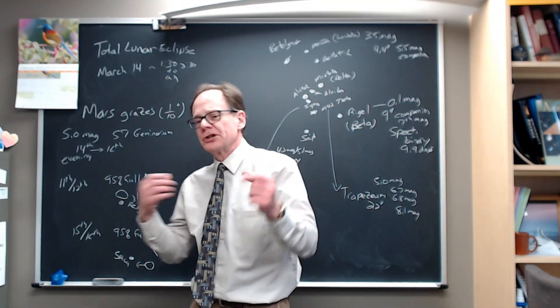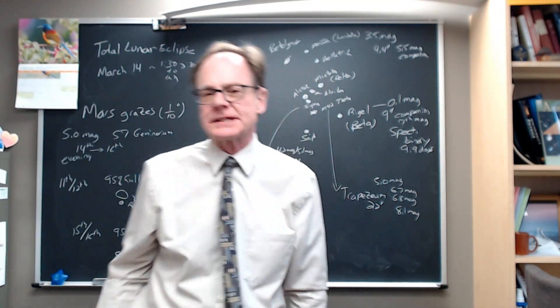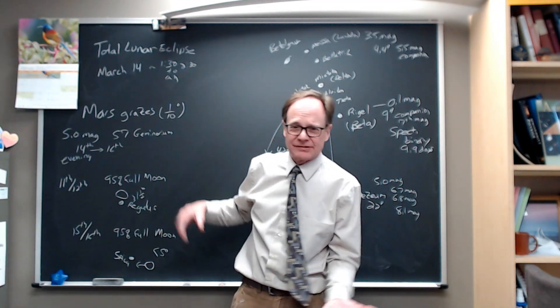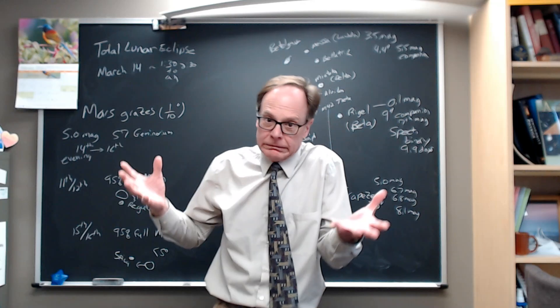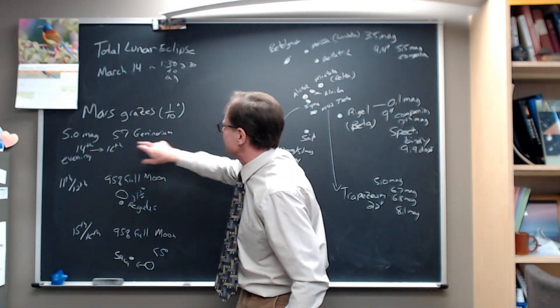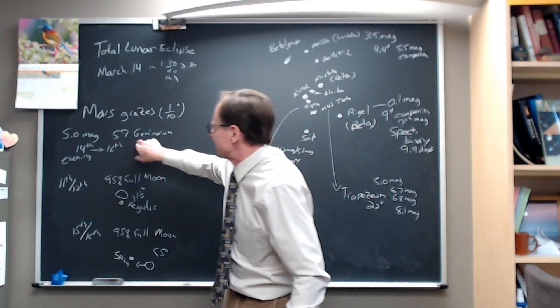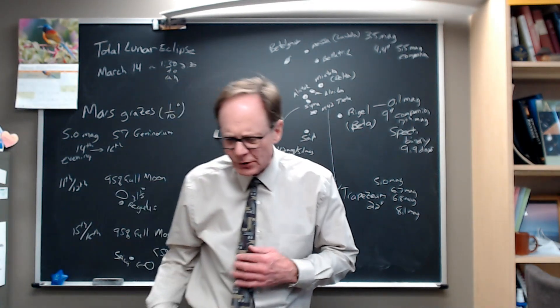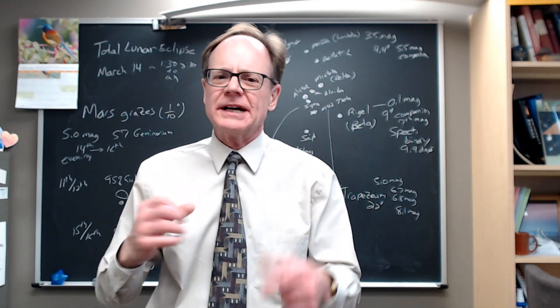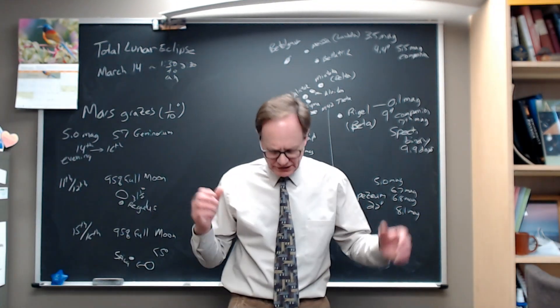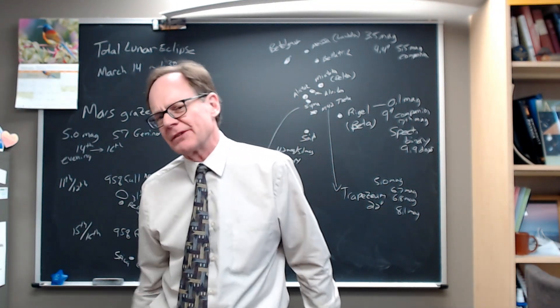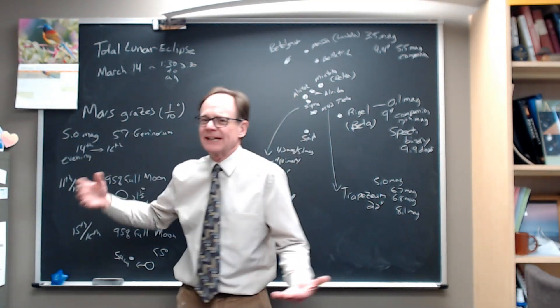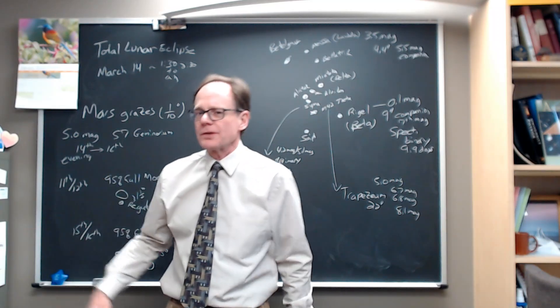But Mars this week, Mars and Jupiter are still well placed in the night sky for observation. Mars grazes 57 Geminorum. 57 Geminorum is a fifth magnitude star. That's going to be right at the limit of what most of us could see under dark skies. If it's really dark, you might be able to see down closer to sixth magnitude. If you have any light pollution at all, it's probably more like fourth magnitude. So fifth magnitude is right at the limit.